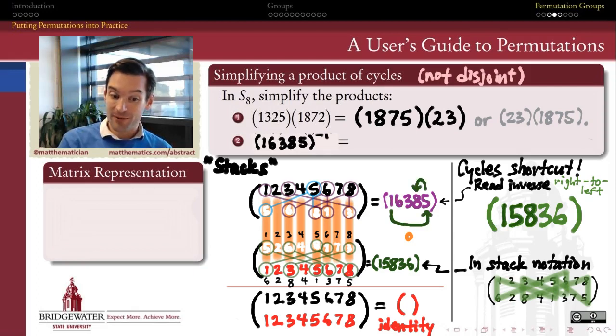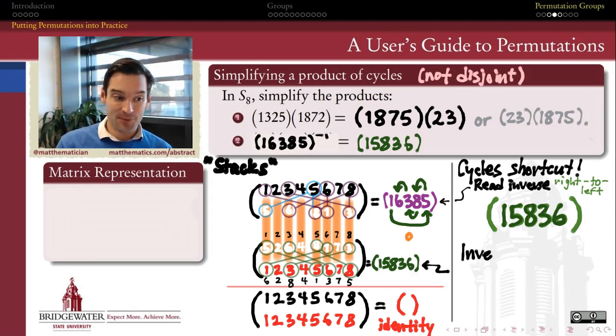One goes to 5, which goes to 8, which goes to 3, which goes to 6, which goes back to 1. So that's the great news. After the last five minutes of my talking, you can take away that shortcut if you like. To find the inverse of a k cycle, you're going to get another k cycle. And all you have to do to find it, is just read the original cycle backwards.